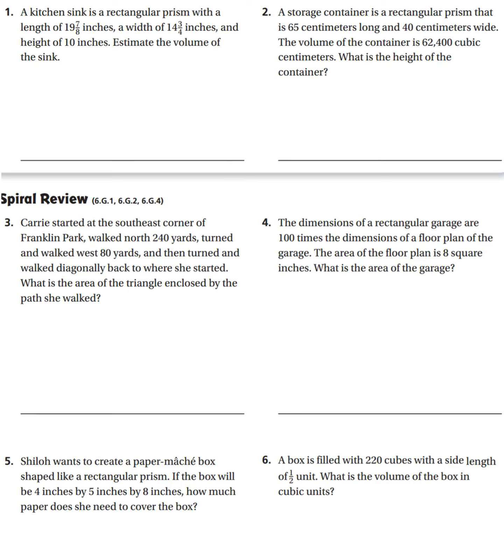Alright, now I'm on the back side of the homework, page 196. Kitchen sink is a rectangular prism, 19 and 7/8 times 14 and 3/4 times 10, so you're just multiplying those.